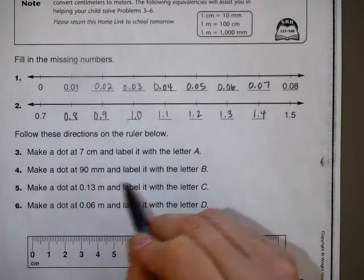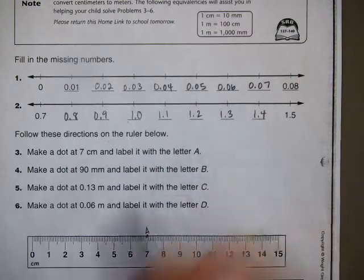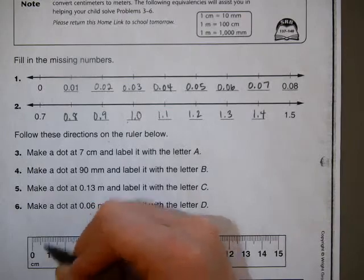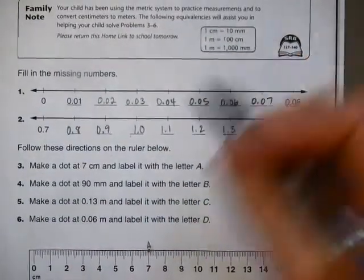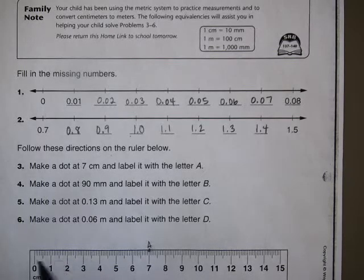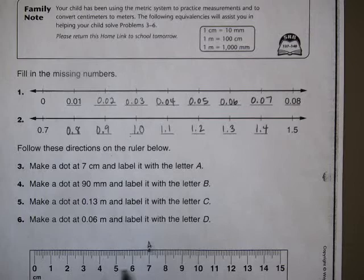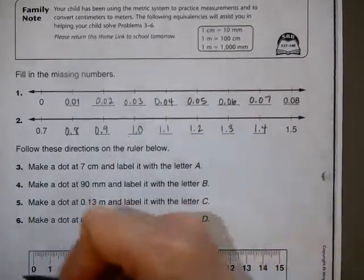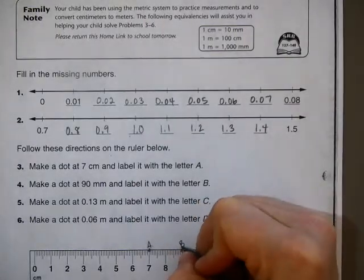Make a dot at 90 millimeters and label it with B. Well, I know that there are 10 millimeters in a centimeter, and it also tells me that up here. So I'm just going to count by 10s until I get to 90: 10, 20, 30, 40. That means there's been 40 millimeters so far. 50, 60, 70, 80, 90. Right here. So there's 90 millimeters there. So that's going to be B.